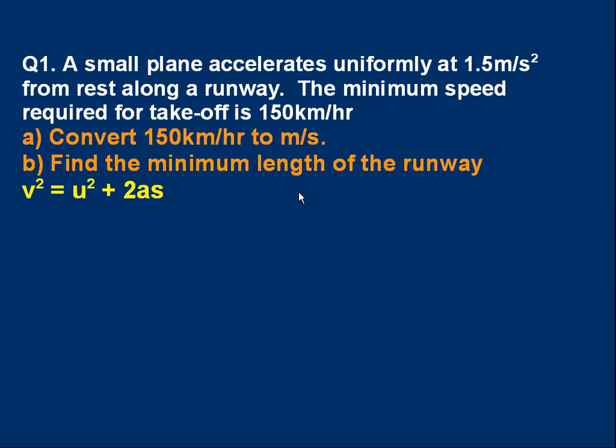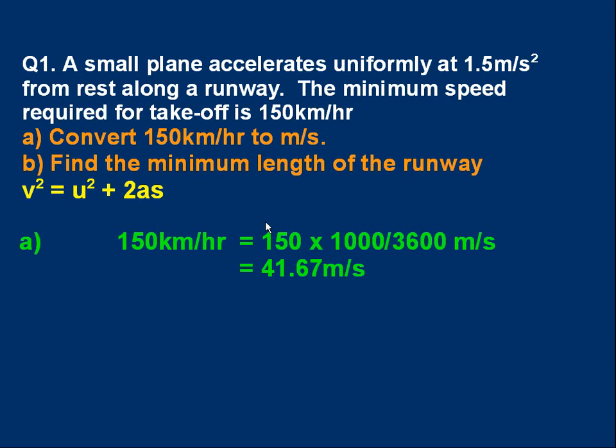Let's go through this. 150 km/hr: there are 1,000 meters in a kilometer, so I've got to multiply 150 by 1,000. That's 150,000 meters. And an hour is 3,600 seconds. So I've got to divide by 3,600. And if we do that, we get 41.67 m/s.